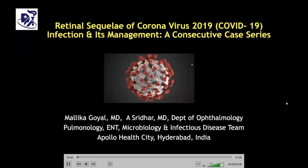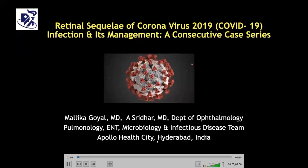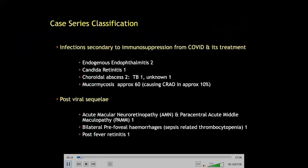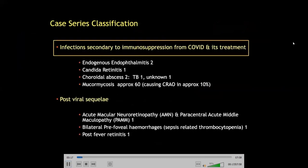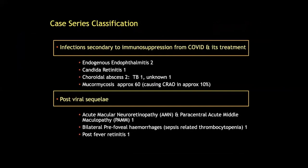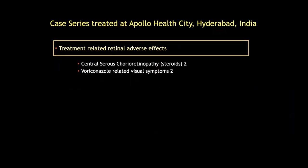Retinal sequelae of COVID-19 infection and its management: a consecutive case series treated at our hospital. Our cases can be classified as infections secondary to immunosuppression from COVID and its treatment, including endogenous endophthalmitis, candida retinitis, choroidal abscess, and mucormycosis causing central retinal artery occlusion; post-viral sequelae including acute macular neuroretinopathy, paracentral acute middle maculopathy, bilateral pre-foveal hemorrhages, and post-fever retinitis; and treatment-related adverse effects including central serous retinopathy associated with steroid use and voriconazole-related visual symptoms.